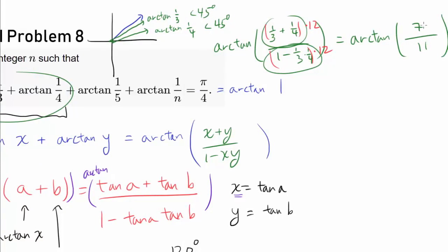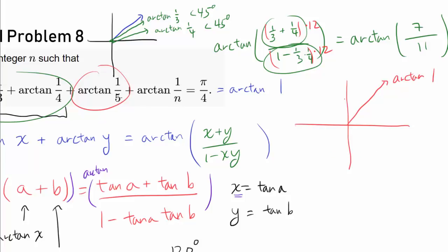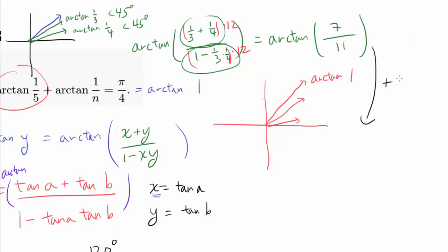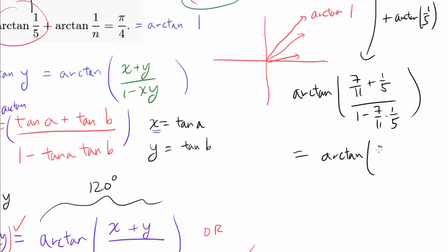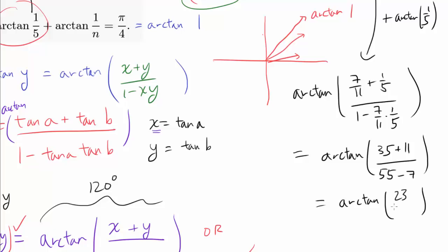Next, we add arctan(7/11) + arctan(1/5). Since 7/11 and 1/5 are both less than 1, both angles are less than 45°, so no correction factor is needed. Applying the formula: arctan((7/11 + 1/5) / (1 − 7/11 · 1/5)). Multiplying top and bottom by 55 gives arctan((35 + 11) / (55 − 7)) = arctan(46/48) = arctan(23/24).